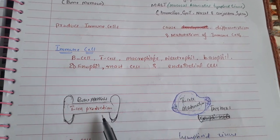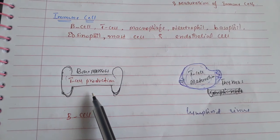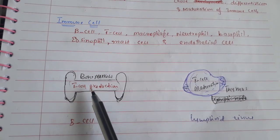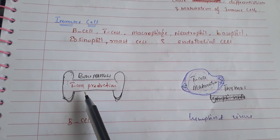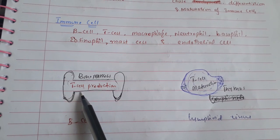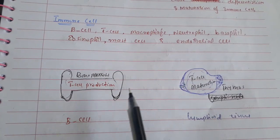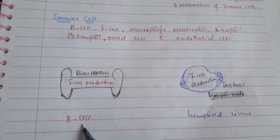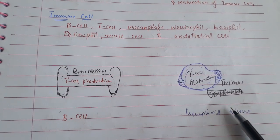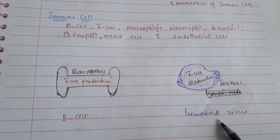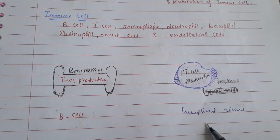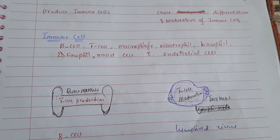T cell and B cell production occurs in the bone marrow. The maturation and differentiation of T cells occurs in the thymus, and the maturation of B cells occurs in the lymphoid tissue, specifically in the germinal center of the lymph node.